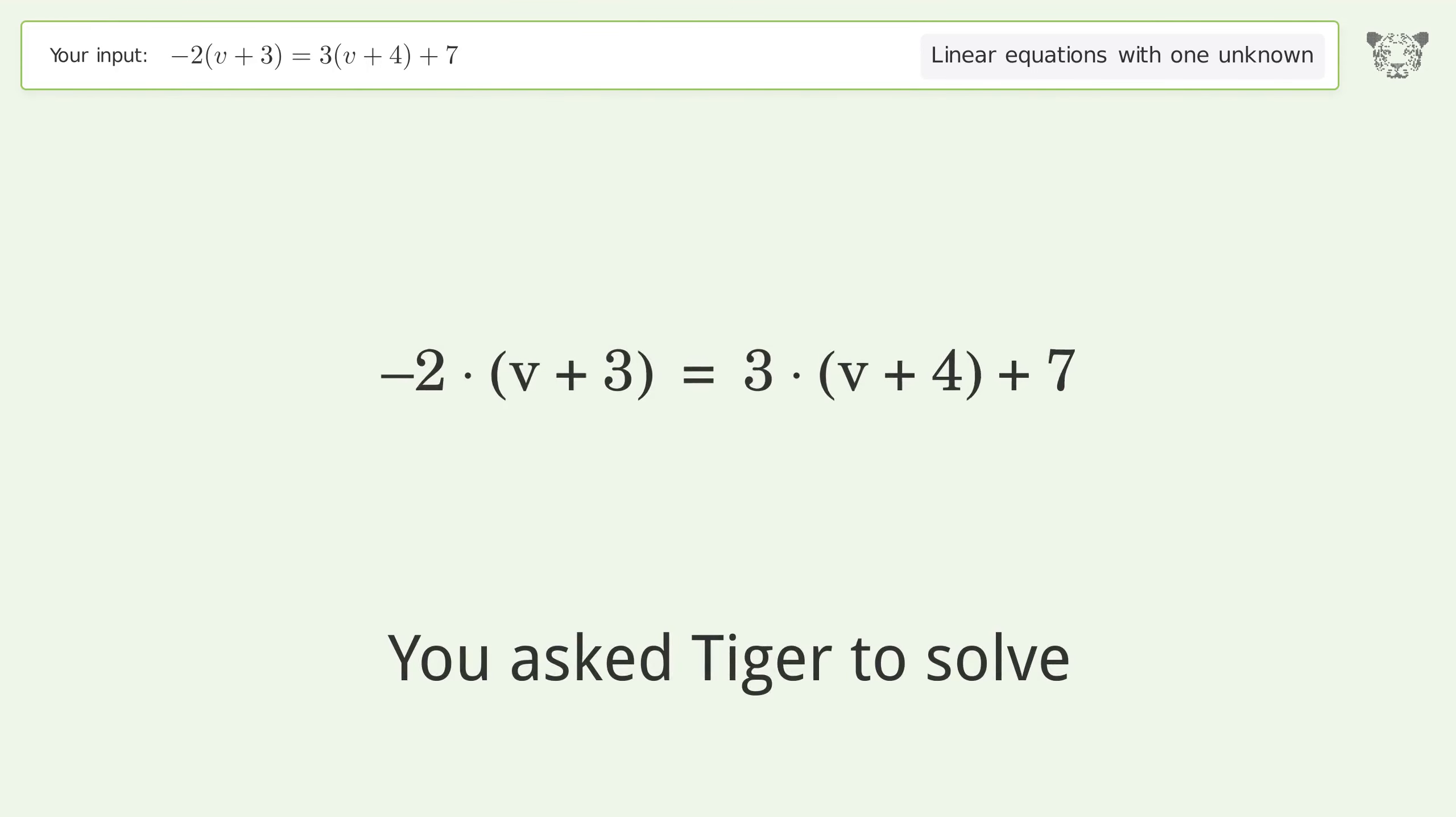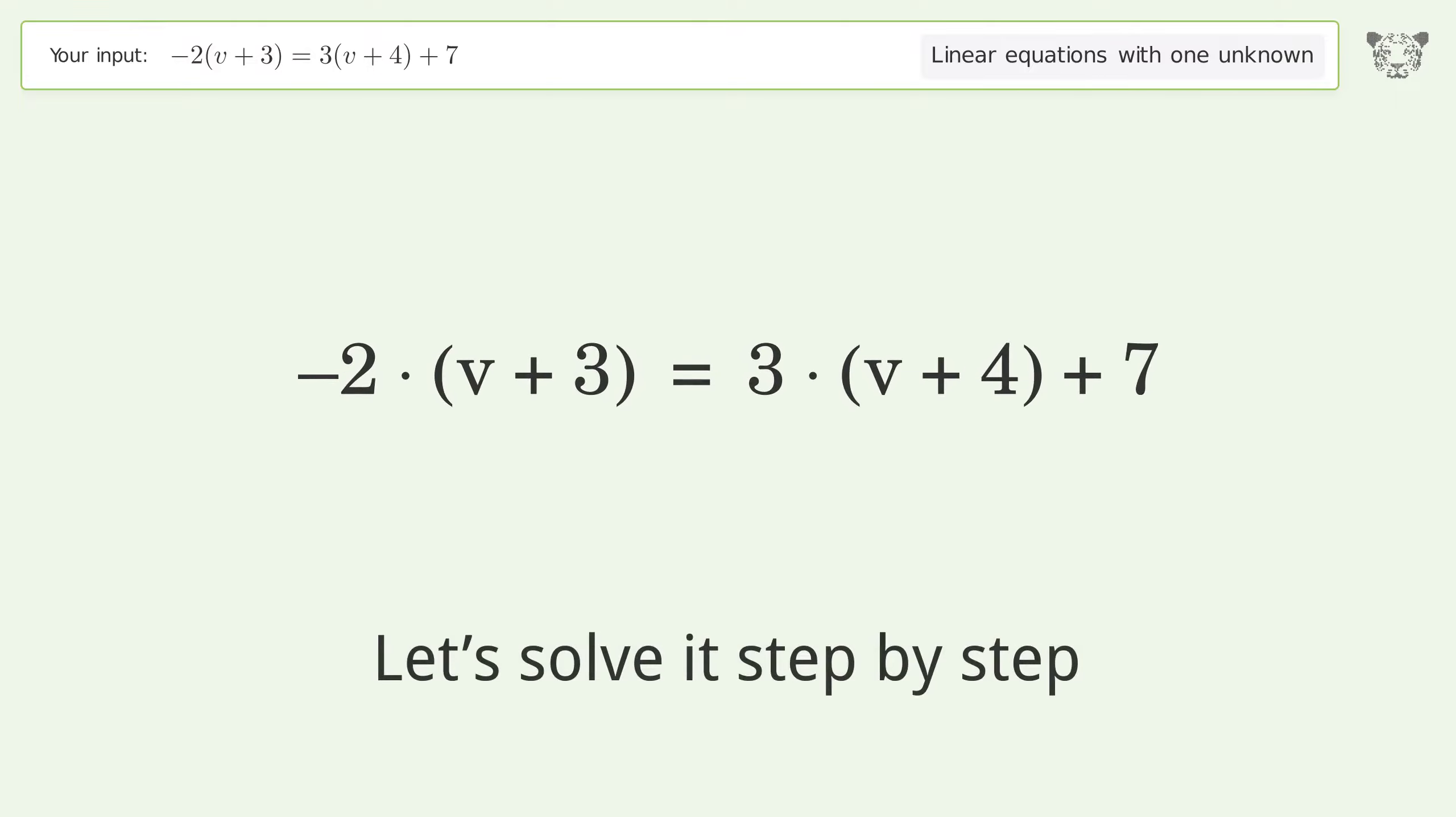You asked Tiger to solve this. This deals with linear equations with one unknown. The final result is v equals negative 5. Let's solve it step by step. Simplify the expression.